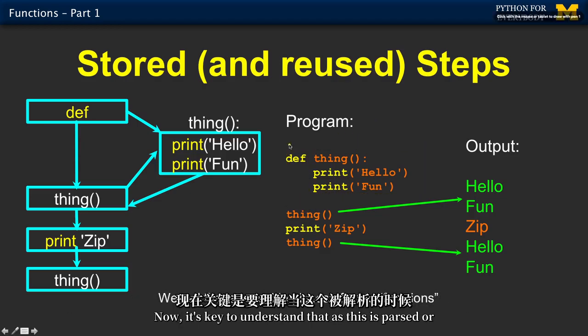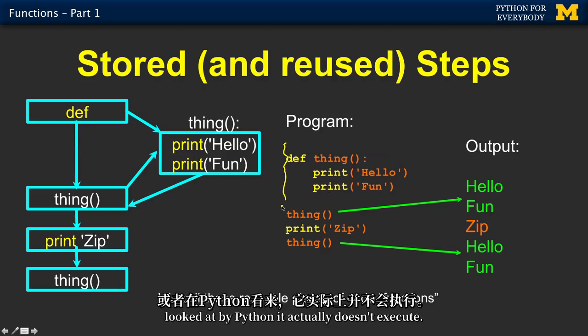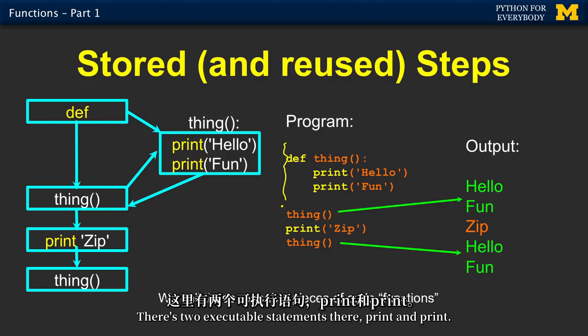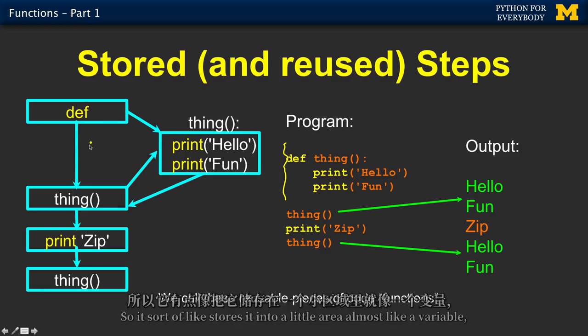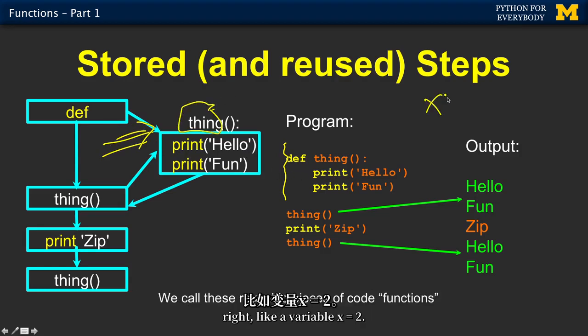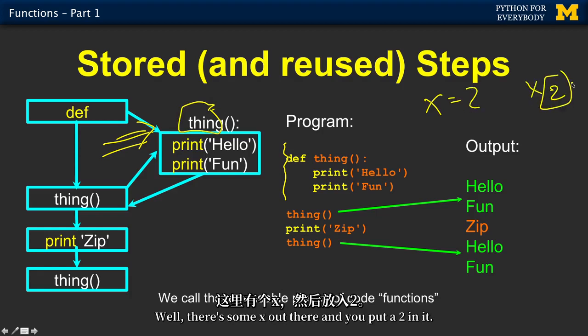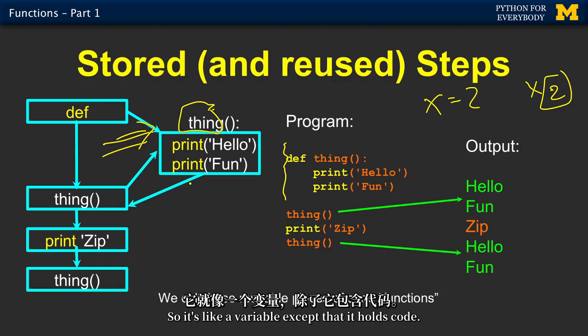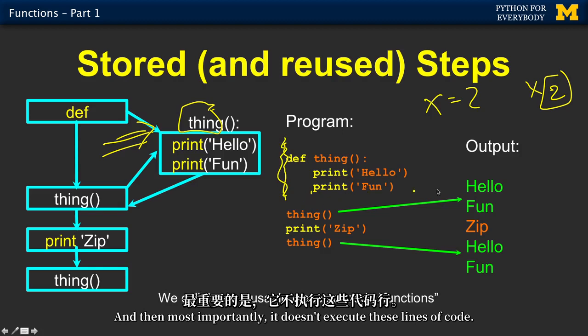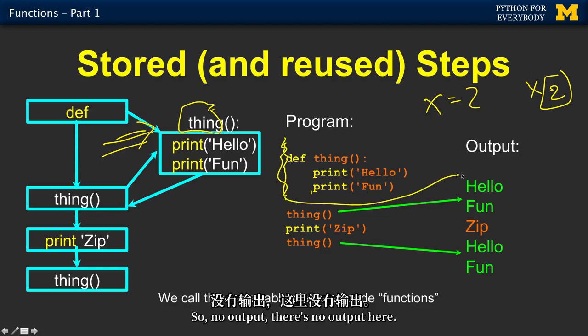Now, it's key to understand that as this is parsed or looked at by Python, it actually doesn't execute. There's two executable statements there, print and print. But all it does is it remembers it. So it sort of stores it into a little area, almost like a variable. Like a variable, x equals 2. Well, there's some x out there and you put a 2 in it. Well, there is this thing out there, t-h-i-n-g, and there's two lines of code in it. So it's like a variable except that it holds code. So a function is kind of like a variable except that it holds code. And most importantly, it doesn't execute these lines of code. So no output, there's no output here. Nothing comes out from that first part.